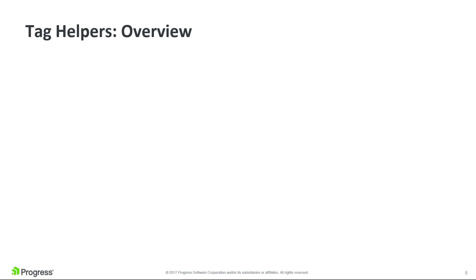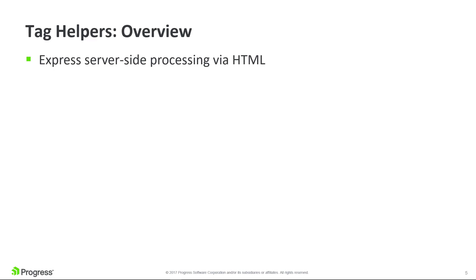What are tag helpers and how do they ease the pain? A tag helper is an ASP.NET Core feature for using HTML elements and attributes to trigger server-side processing. You write what looks like HTML and C# code is executed. Syntactically, this is similar to Angular components or even React JSX components.